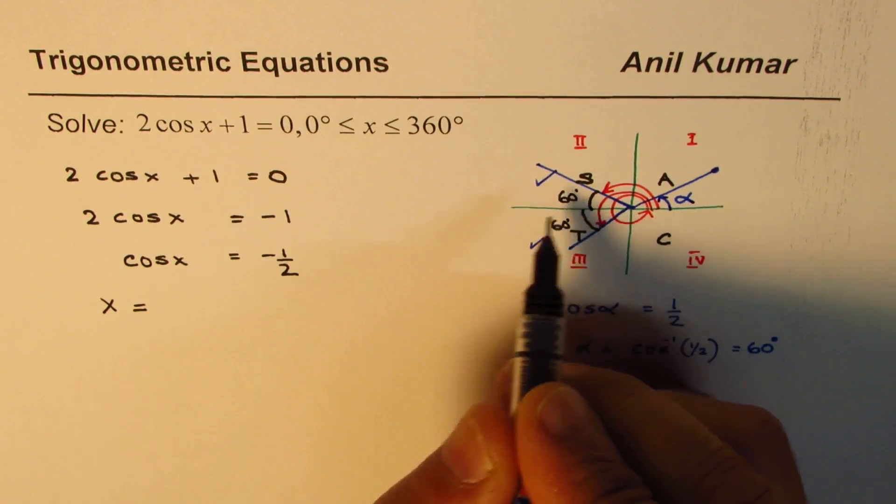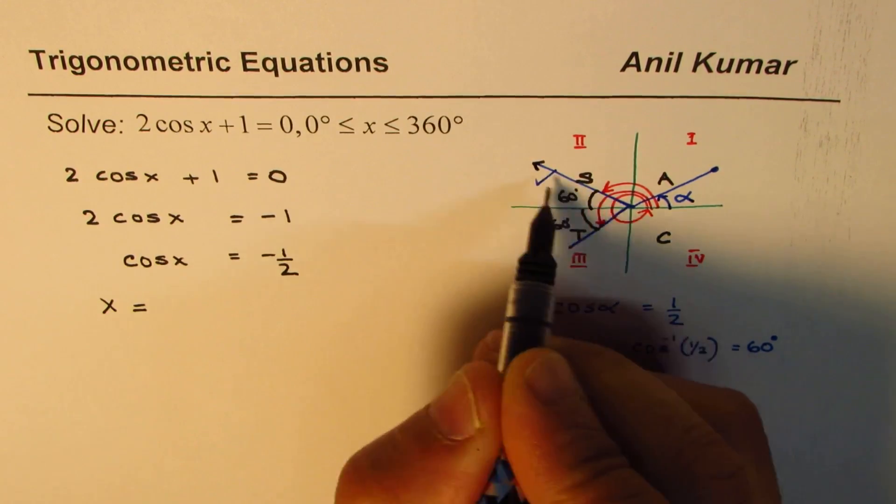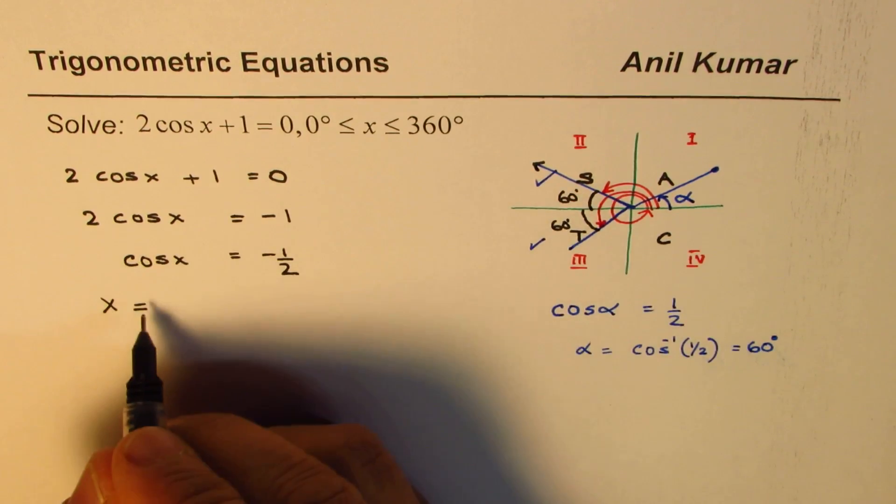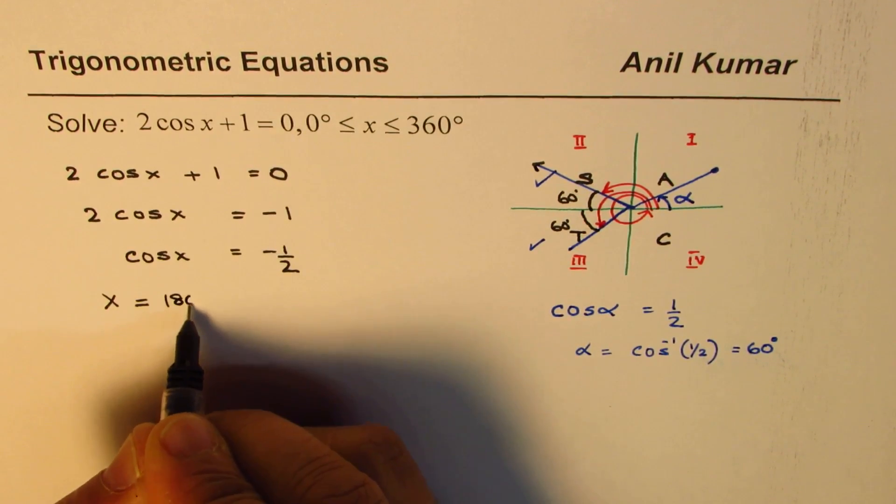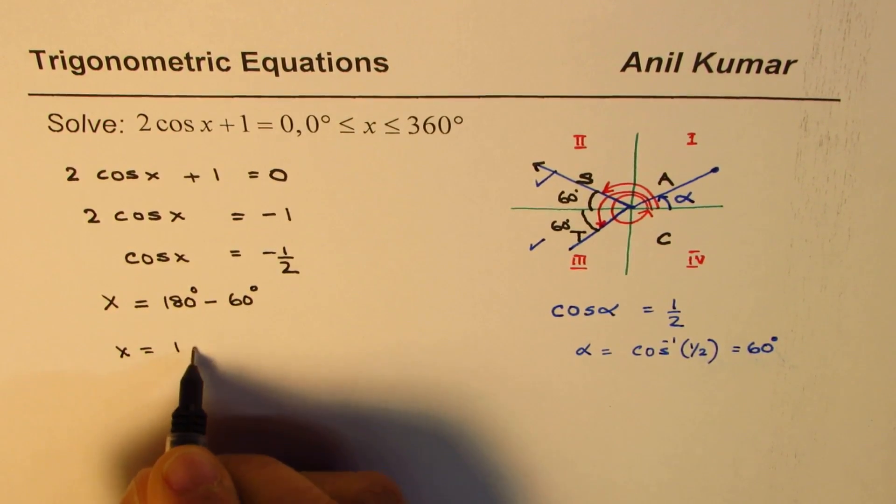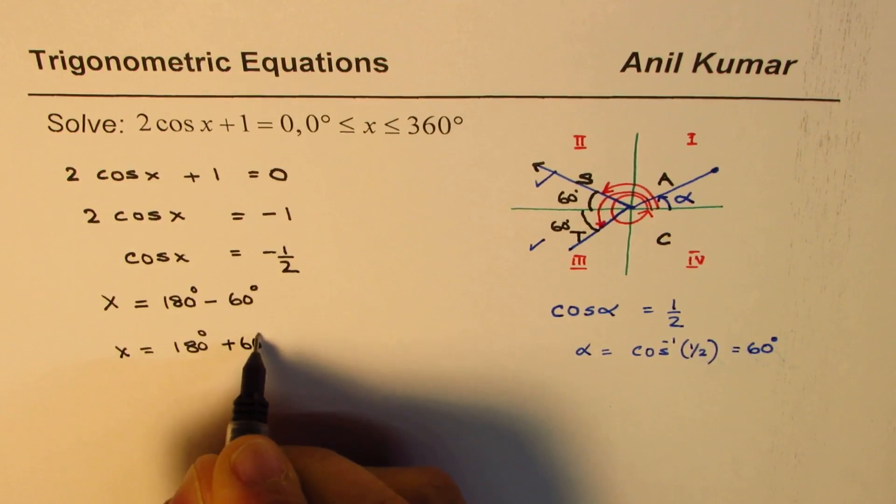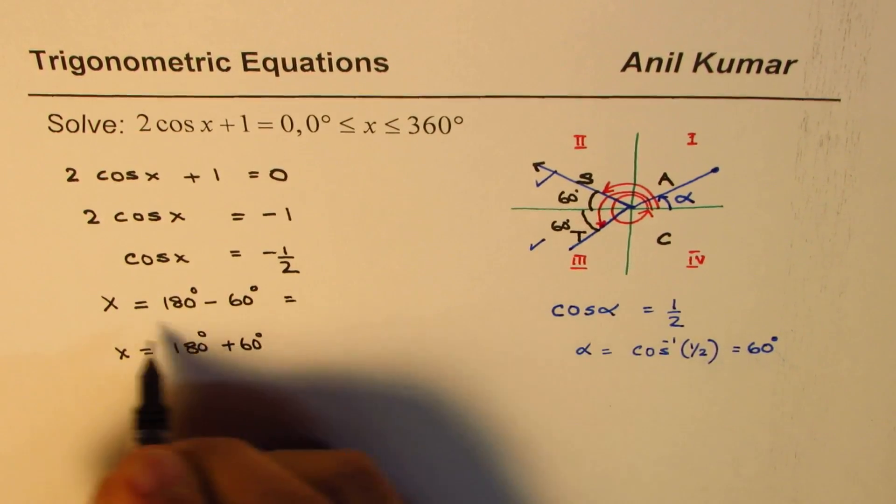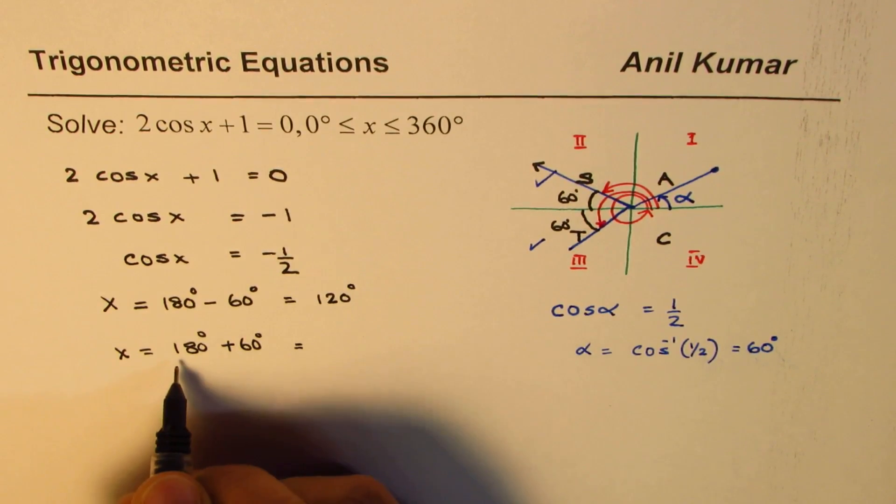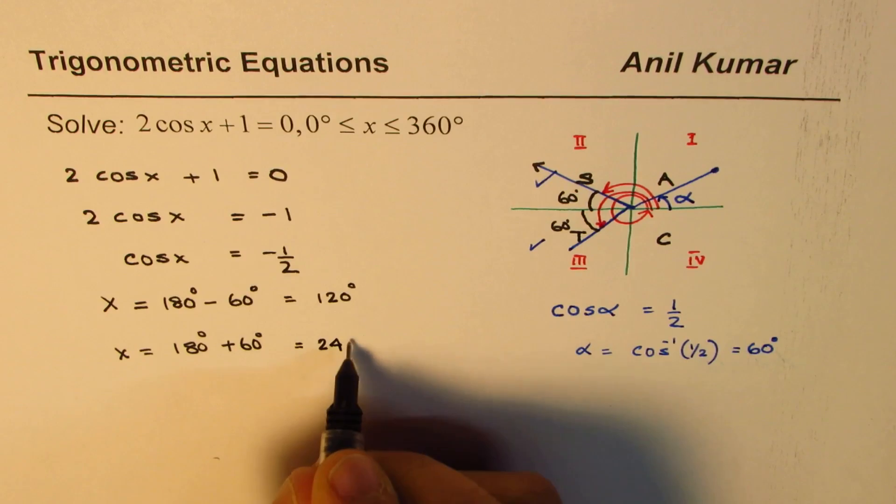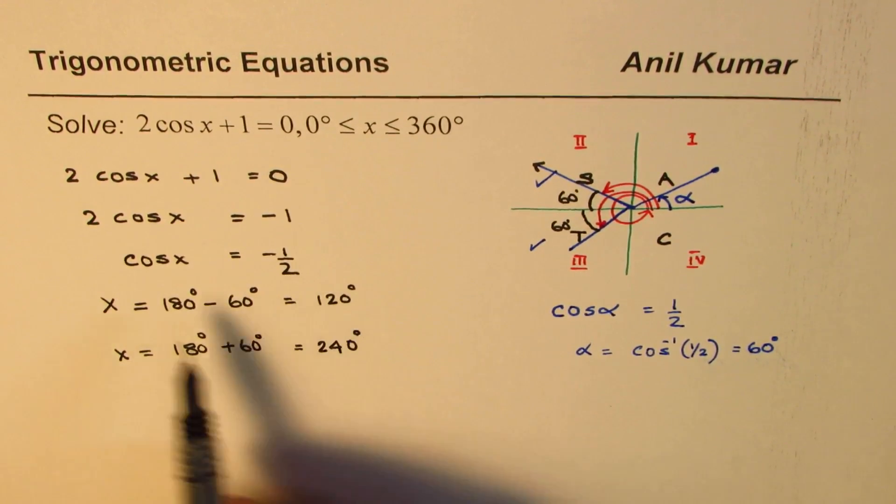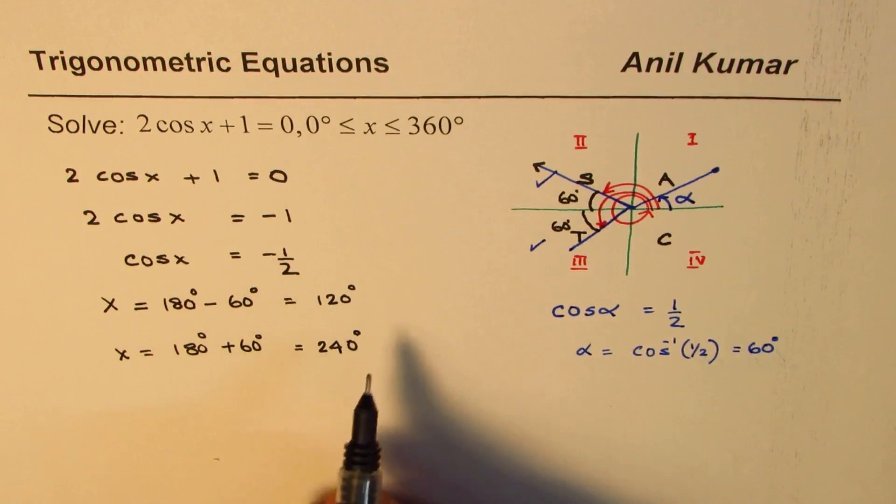So the principal angle for this position in quadrant 2 will be 180 minus 60. So one of the solution is 180 degrees minus 60 degrees. The other solution is 180 degrees plus 60 degrees. Now that gives you 180 minus 60 as 120 degrees. And that gives you 180 plus 60 as 240 degrees. So we get two different solutions for cos x equals to minus half which are correct solutions.